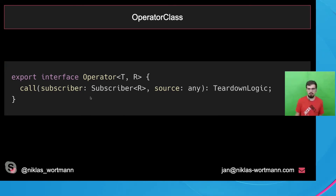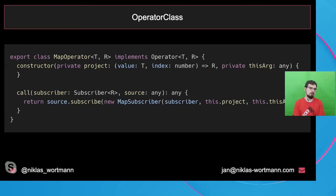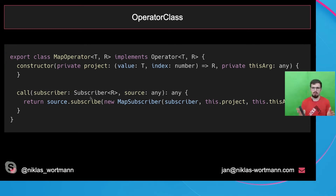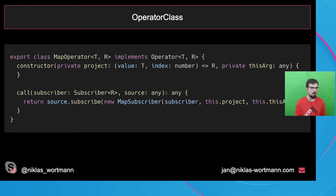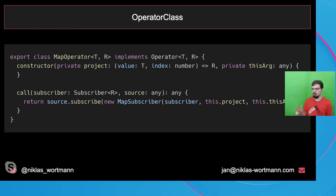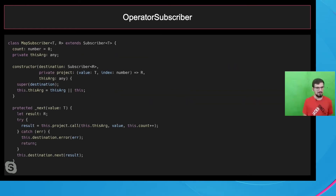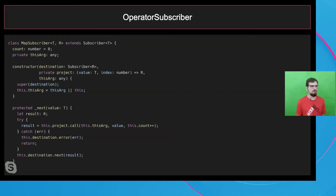The operator class interface in RxJS has a call function that takes a subscriber and the source, and returns teardown logic — which is essentially just an unsubscribe statement. The map operator implementation has a constructor where we pass the projection function, and it also provides an argument to specify what this refers to in this context.